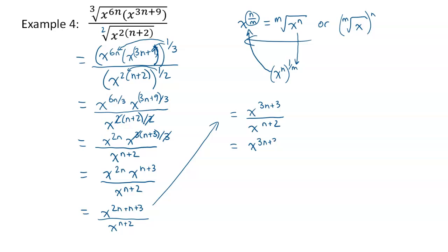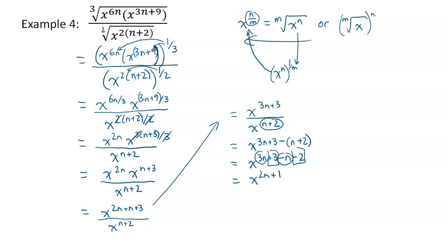Now applying the quotient rule: X to the power of 3N plus 3, subtract the entire exponent N plus 2 — it's important to subtract the entire exponent, so put it in brackets. This gives X to the power of 3N plus 3 minus N minus 2. Adding like terms: 3N and negative N gives 2N, and positive three plus negative two gives plus one. So the final answer is X to the power of 2N plus 1. Until you're given numbers for N or X, you can't do anything further. That's as simple as you can get.